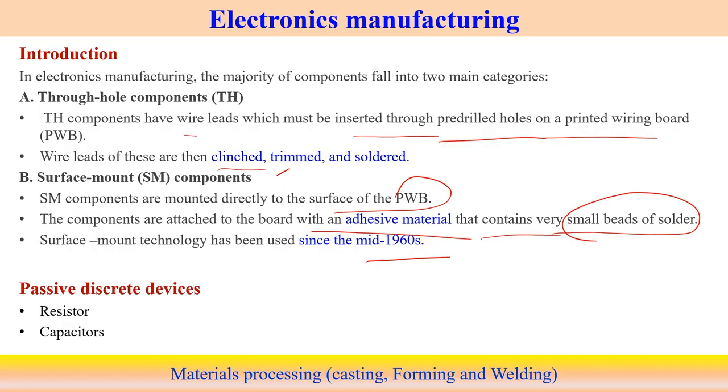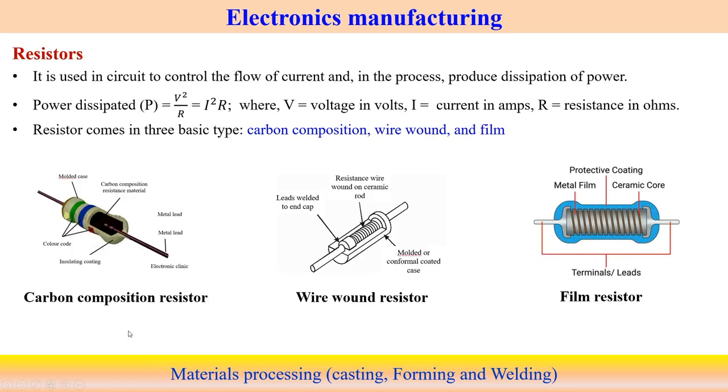Most devices have passive discrete components associated with the electronics industry: resistors, capacitors, and semiconductors. Resistors are used to control the flow of electric current and also to control power dissipation, calculated as V²/R or I²R, where V is voltage, I is current, and R is resistance in ohms. Resistors come in three basic types: carbon composition, wire wound, and film.